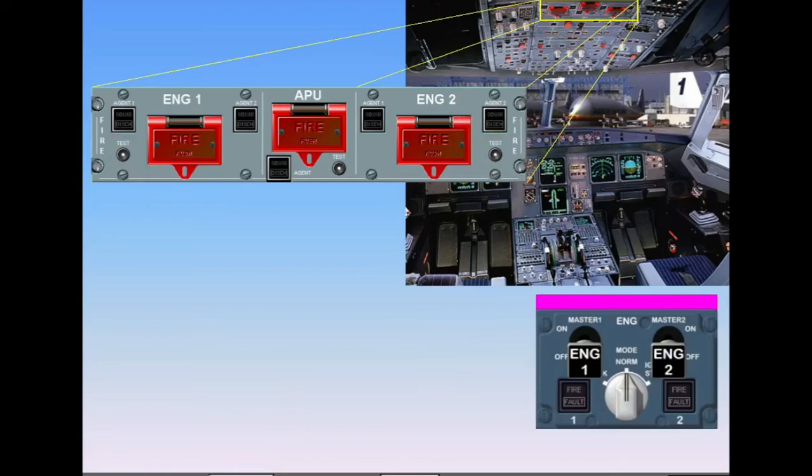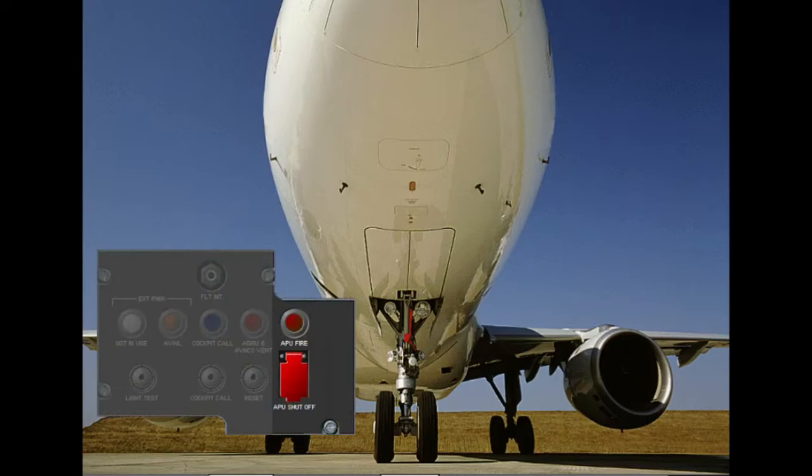In addition to the indications on the fire panel, there is a fire light for each engine on the engine panel located on the pedestal, and a fire light for the APU and a guarded APU shut-off switch located on the external power panel.